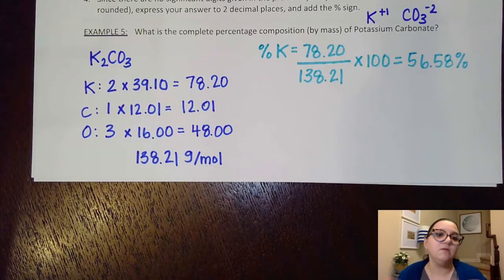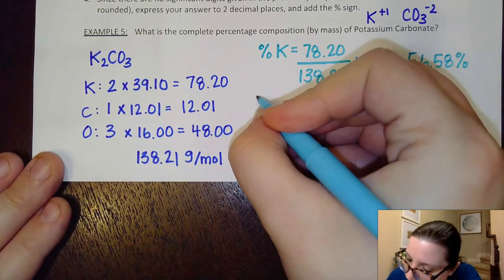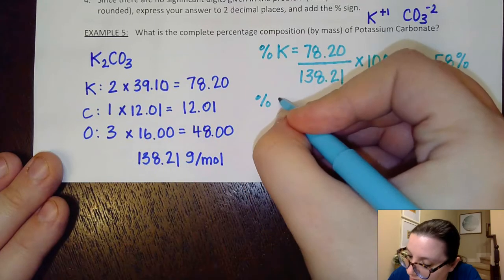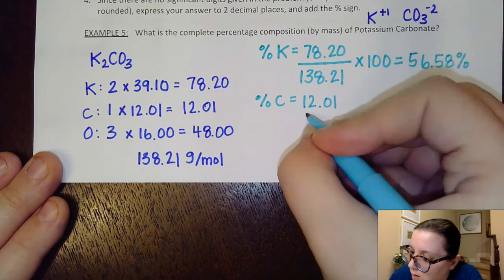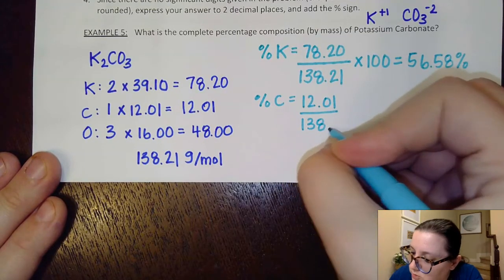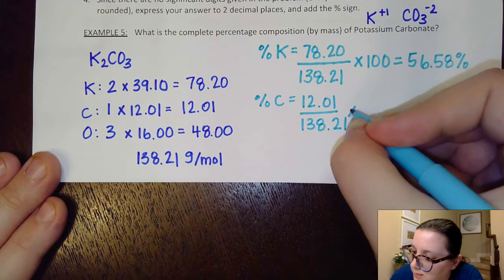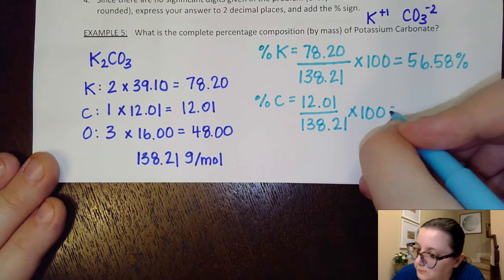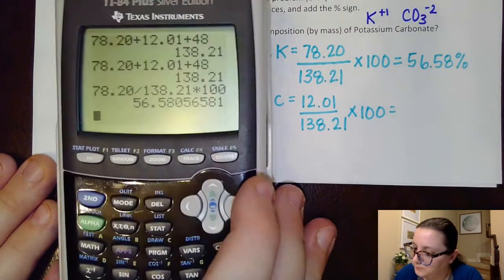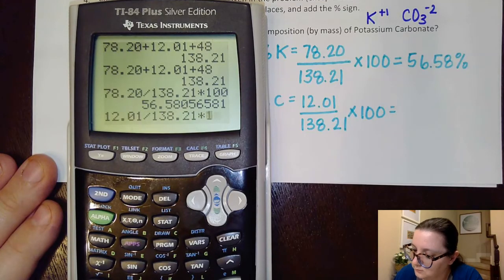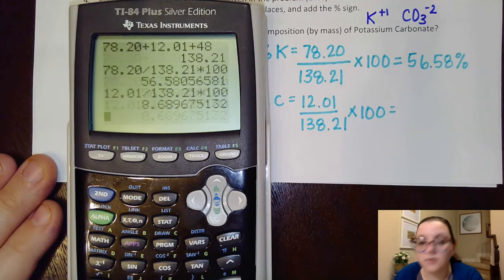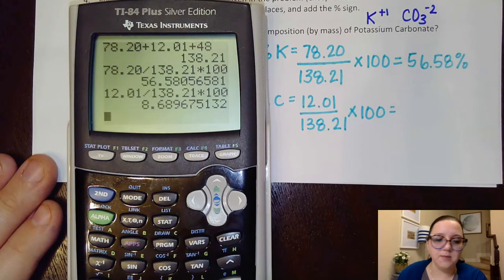We're now going to do the same thing for the other two elements. So for the percentage of carbon, I would have 12.01 over the 138.21 times 100. So let's plug that in real quick. And we see that comes out to right around 8.69%.